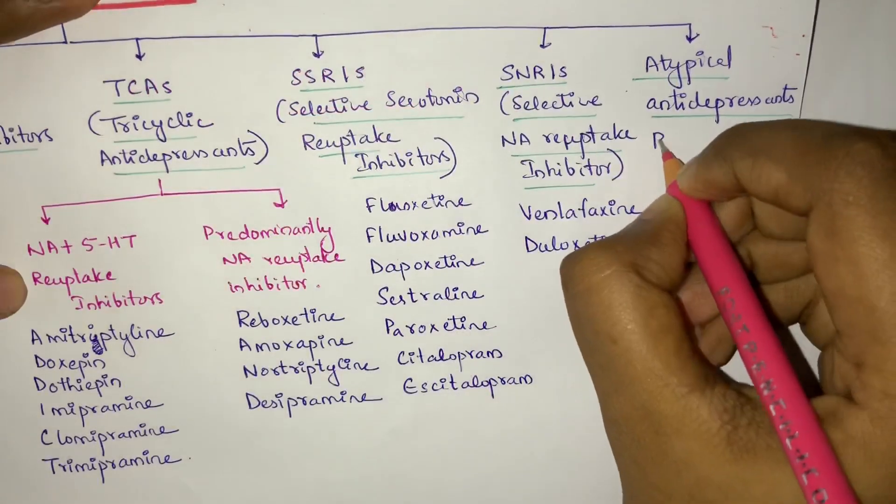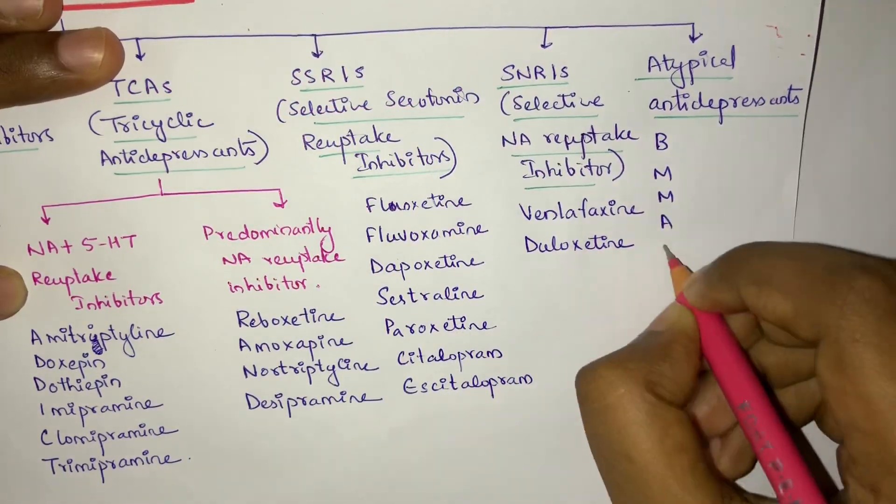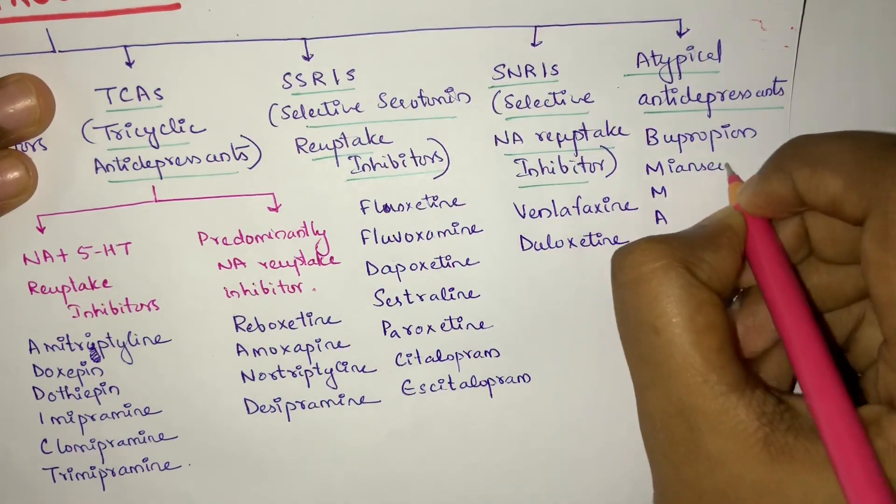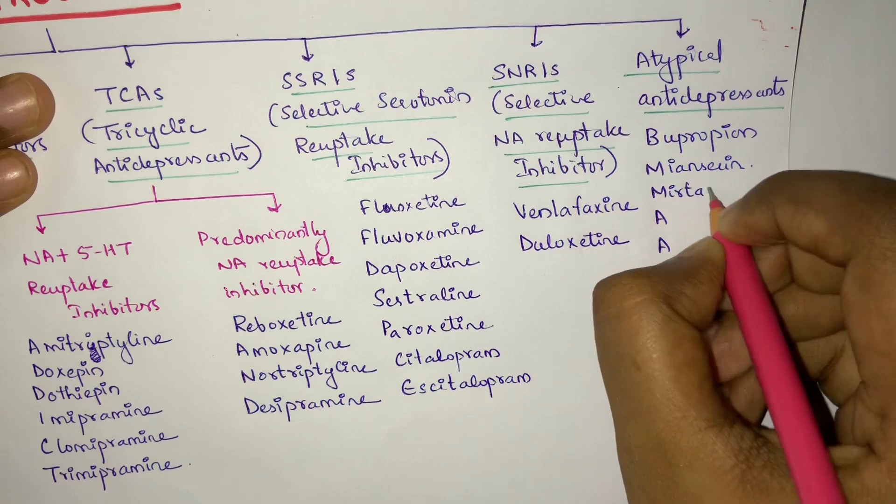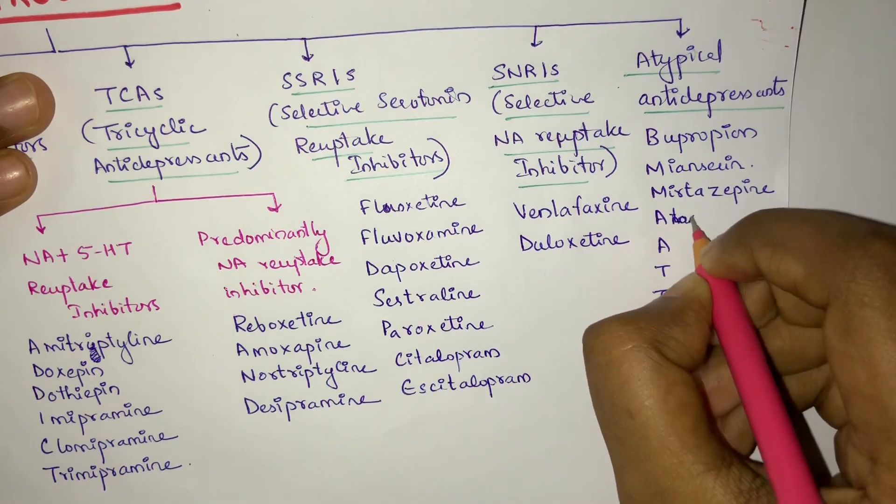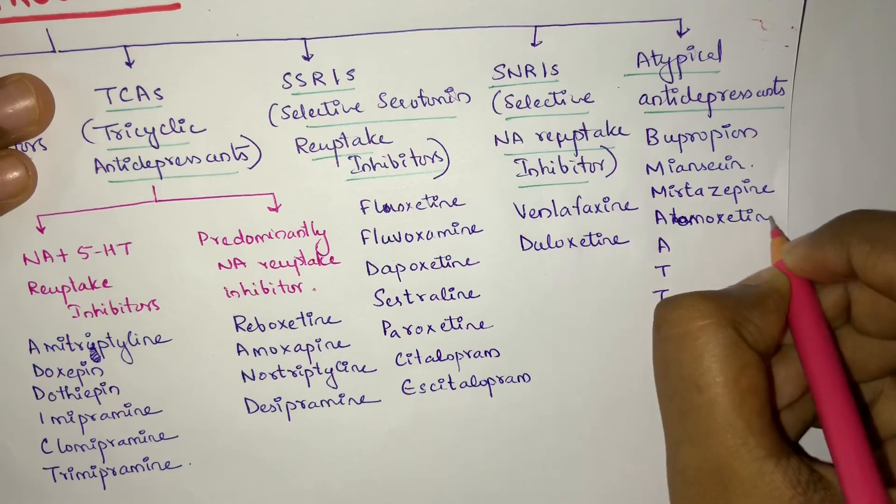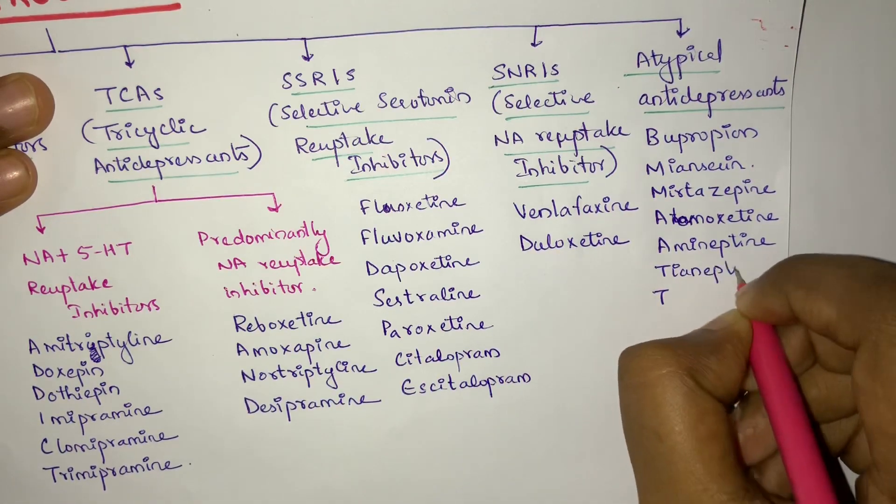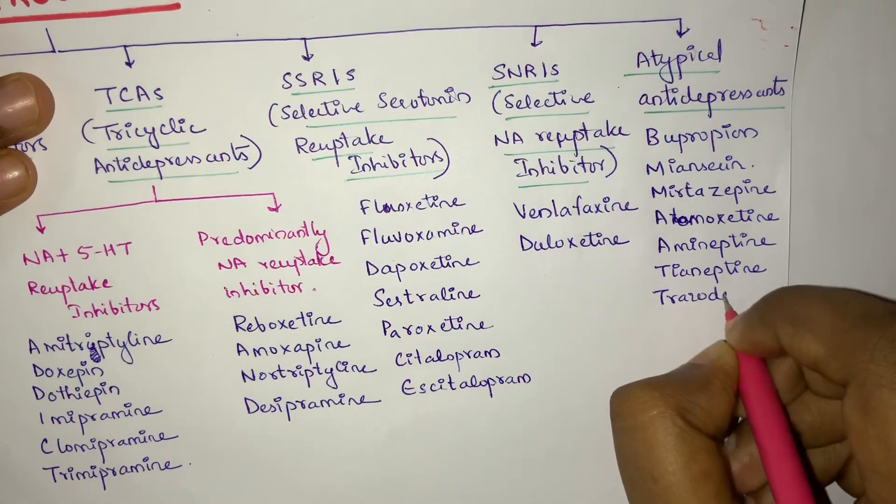Next, about atypical antidepressants: BMMADD. B for Bupropion, M for Mianserin, M for Mirtazapine, A for Atomoxetine, the next A is for Amineptine, D for Tianeptine, and D for Trazodone.